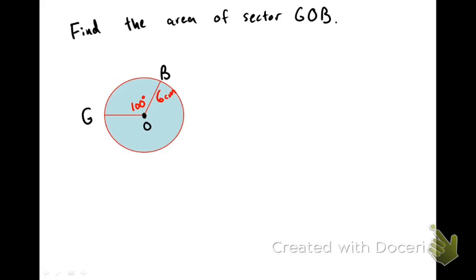So here's our example problem. If we have a central angle of 100 degrees and our radius is 6, what's the area of sector GOB? We start with x over 360 times pi r squared. So that's where the 100, which is our central angle, goes, and our radius 6 goes in for the r.